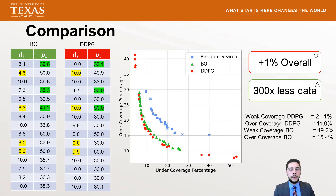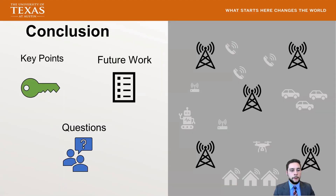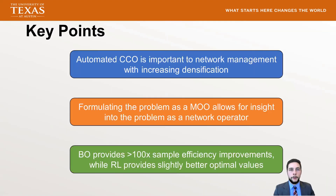In conclusion: automated CCO is important because networks are becoming so dense that a single human — or even a group — cannot manage all the far-reaching consequences of network changes. Formulating this as a multi-objective optimization provides insight for network operators, allowing them to see the trade-off when increasing or decreasing one metric and how it affects the other. Bayesian optimization provides over 100 times more sample efficiency, while reinforcement learning achieved slightly better final values — showing a trade-off between the algorithms as well.